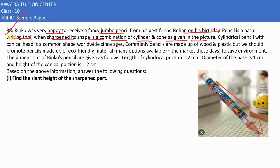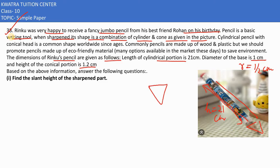The dimensions of Rinku's pencil are given as follows: the length of the cylindrical portion is 21 cm, the diameter of the base is 1 cm, so the radius would be 1/2 cm. The height of the conical portion is 1.2 cm, and the radius is 1/2 cm.